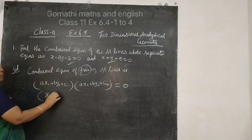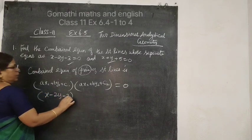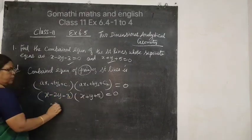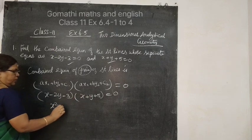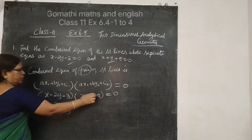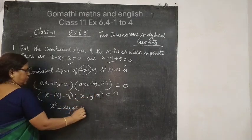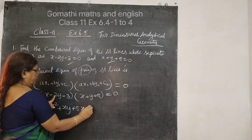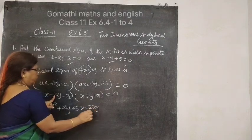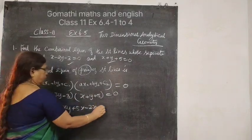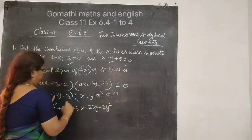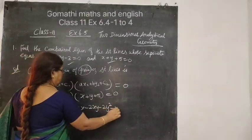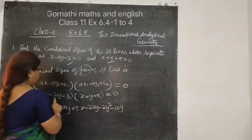So x minus 2y minus 3, then x into x gives x squared, x into y gives xy, x into 5 gives 5x. Minus 2y gives minus 2xy, minus 2y times y gives y squared, then minus 10y.